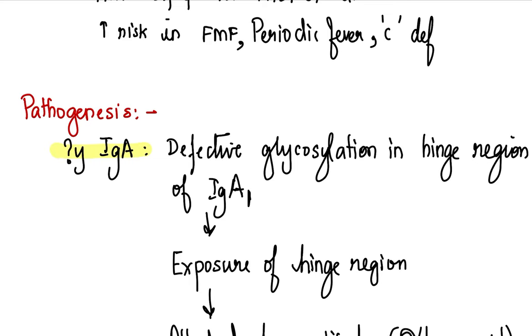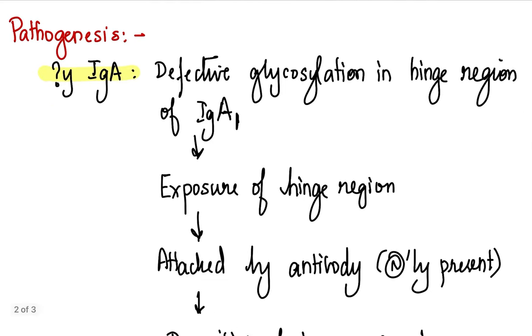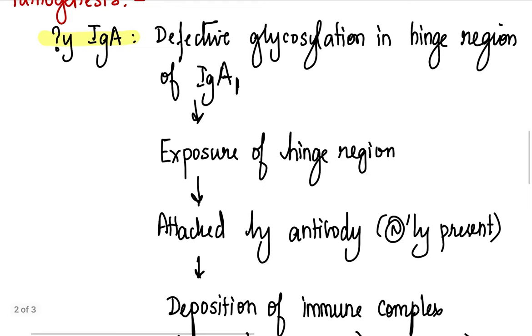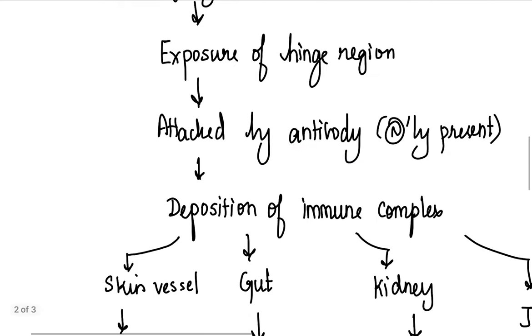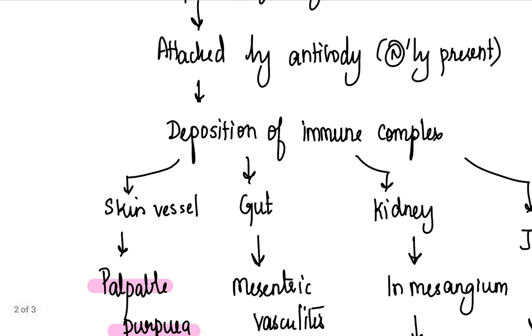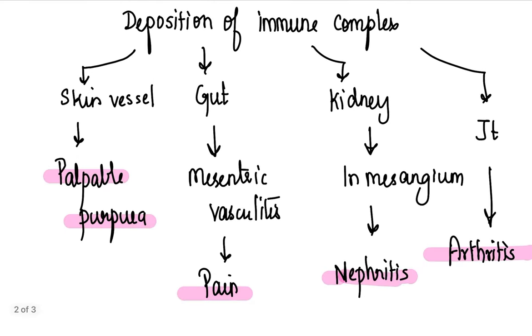What studies have shown is that there is a defective glycosylation in the hinge region of immunoglobulin A1. Because of this lack of glycosylation or defective glycosylation, this hinge region which is usually hidden gets exposed. So this is considered as a new antigen and it is attacked by preformed antibodies, antibodies that are already present in the body. It usually does not attack this region because it's glycosylated.